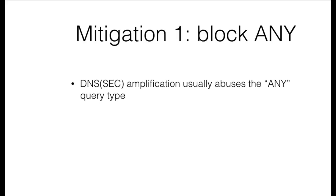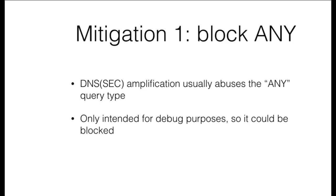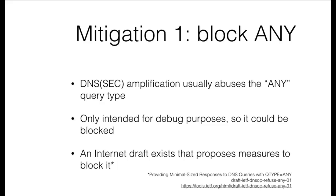As discussed, DNS amplification attacks are often done using any queries. But arguably, the any query type was originally introduced in the DNS for debugging purposes. Only very seldomly are any queries used legitimately, which raises the question of whether any queries should be blocked. In fact, a draft currently circulates in the IETF that proposes measures to stop abuse of any queries, by only allowing them in very specific cases and with very limited answers. This would make DNS amplification and abuse of DNSSEC for amplification much harder.